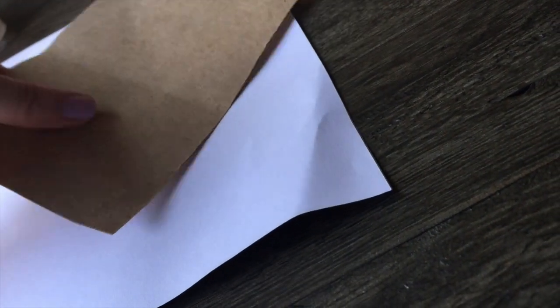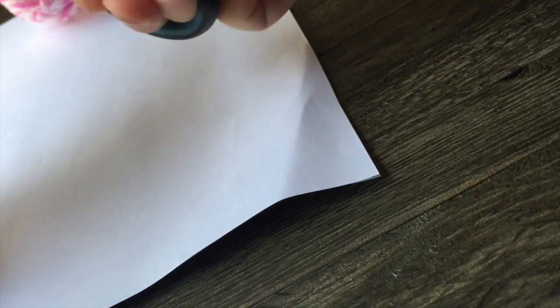Centipedes have segmented bodies and lots of legs, so our paper is going to be the segments of the body. You don't have to use cardboard - you could use construction paper or felt. These are going to be the segments of the body.